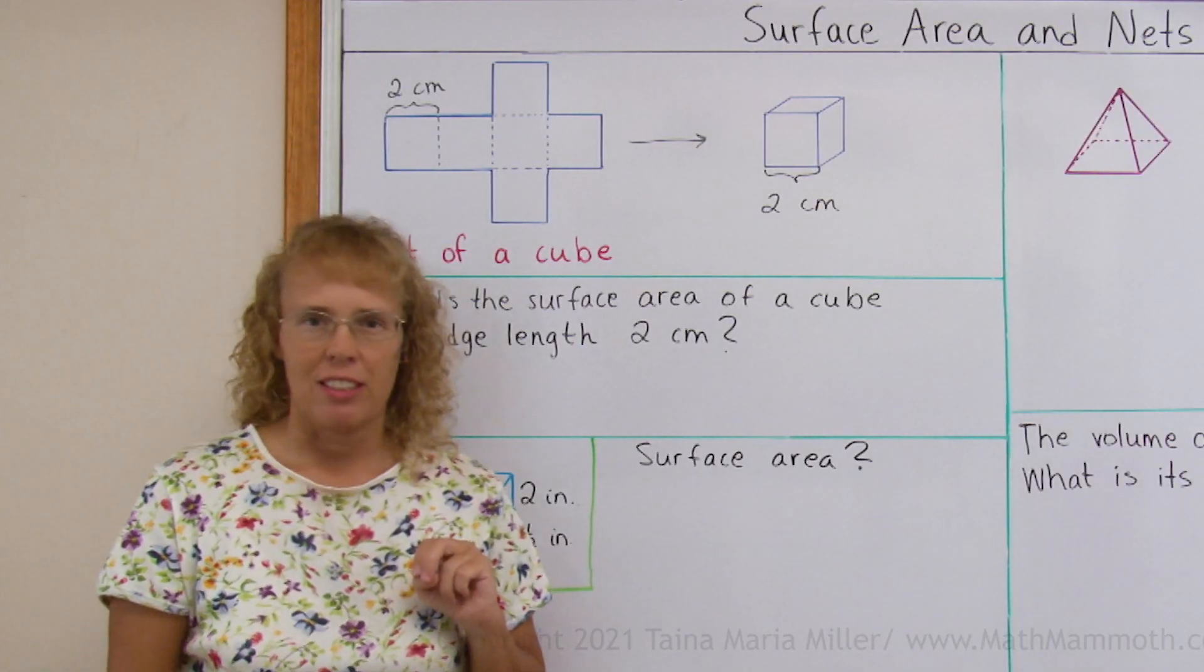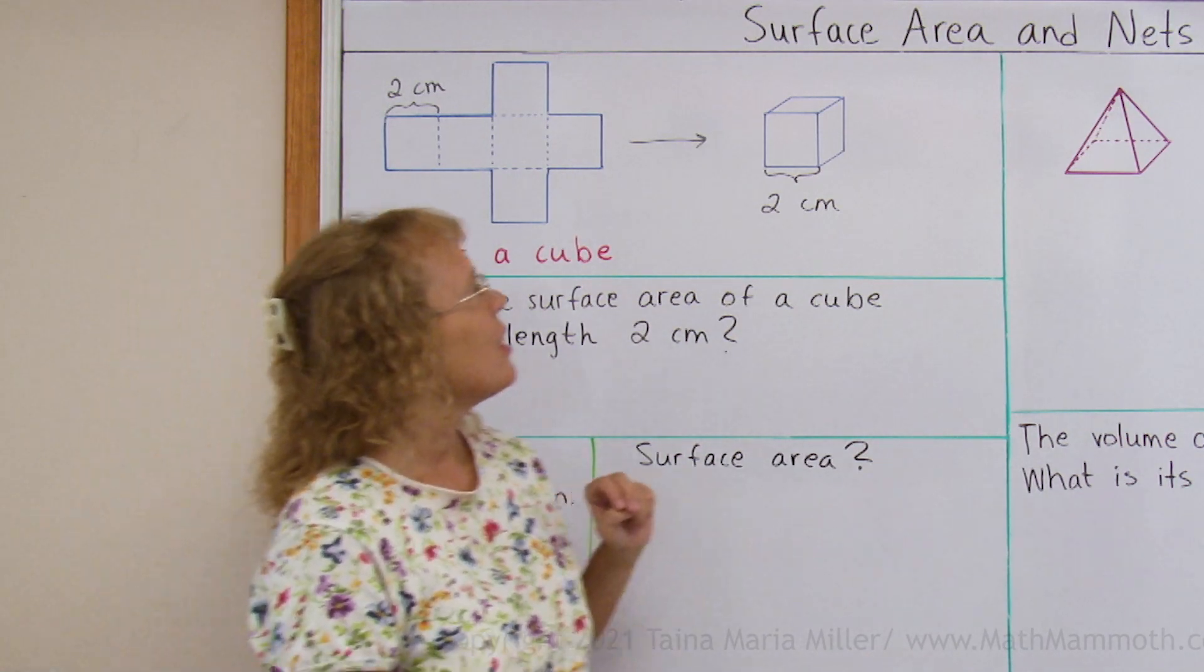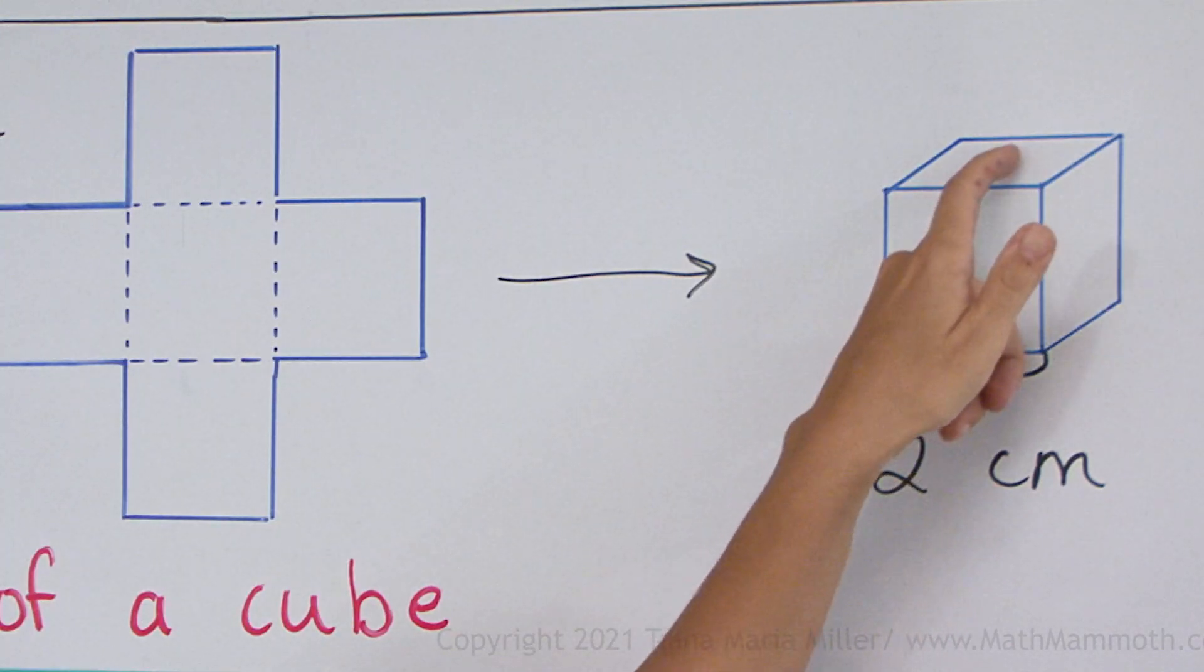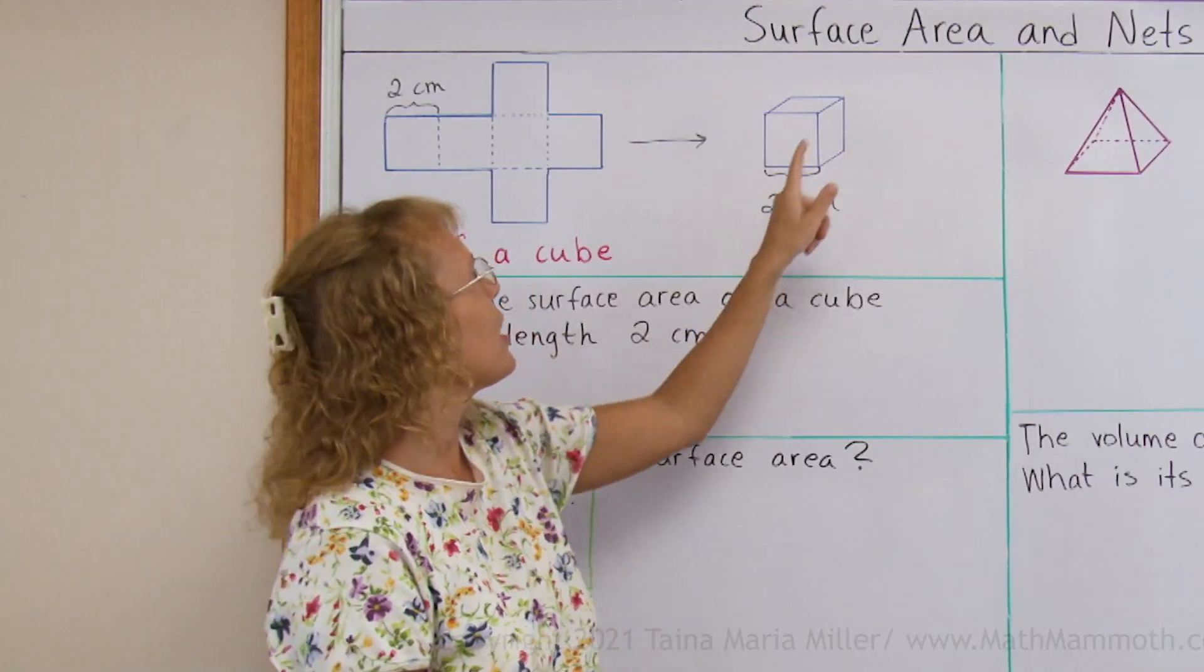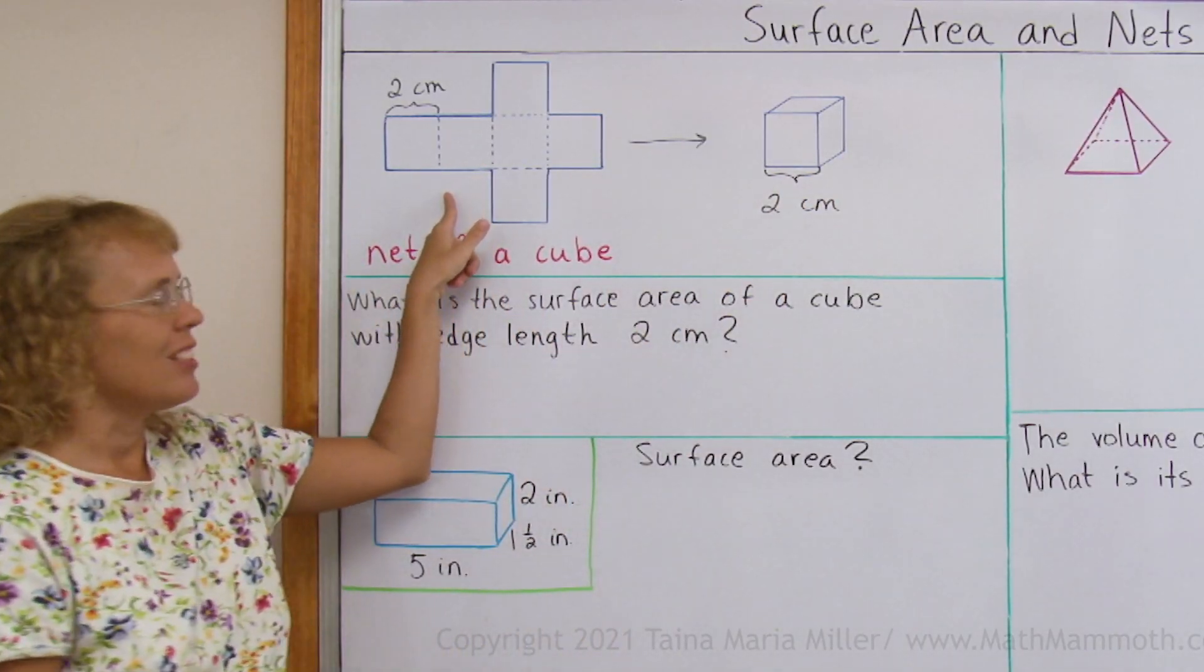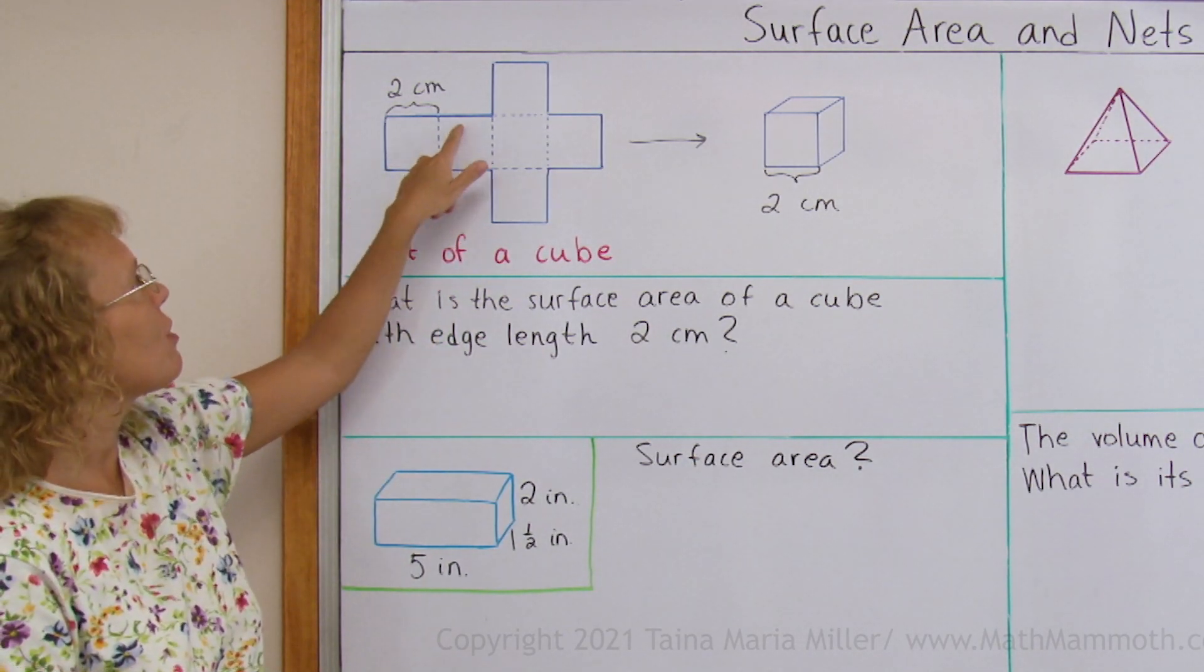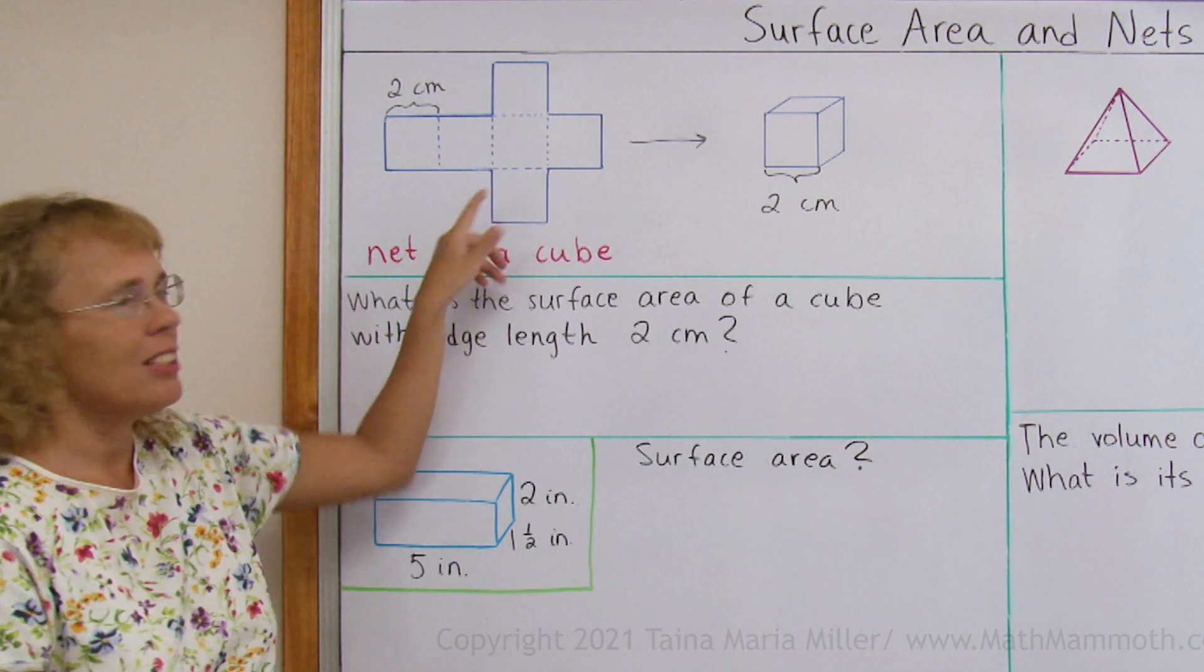And then surface area, what's that? Surface area is the area of these faces of the cube. You can use the net to easily figure out the surface area, because you see here each face of the cube right here, just thrown out flat.